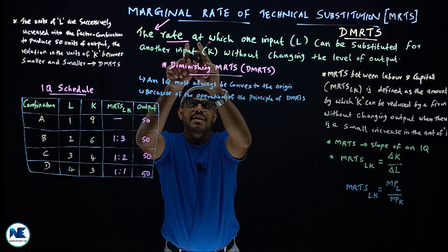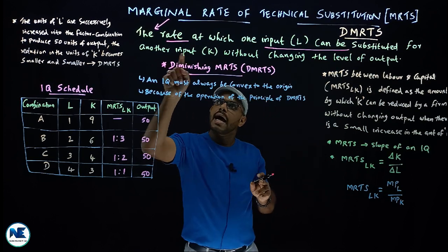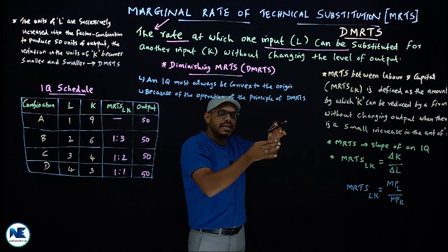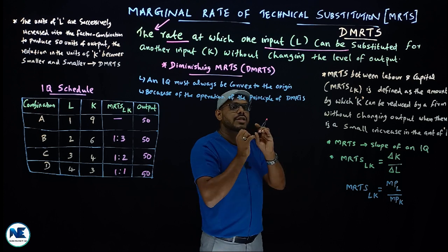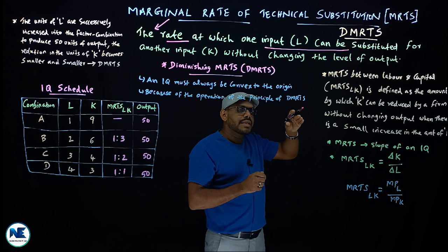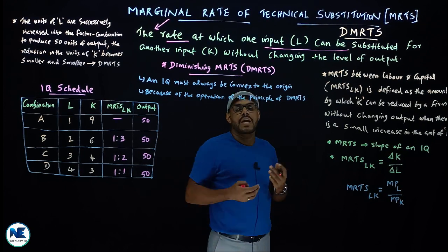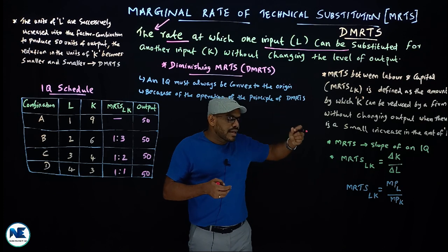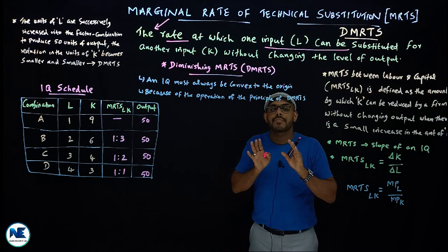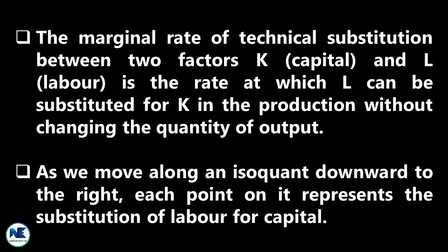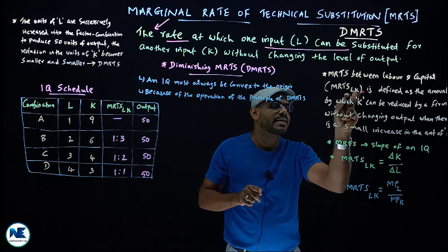MRTS is the rate at which one input — that is, labor — can be substituted for another input. This means the quantity of capital is declining; the firm is sacrificing or giving up units of capital in order to substitute or add one more additional unit of labor, without changing the level of output.